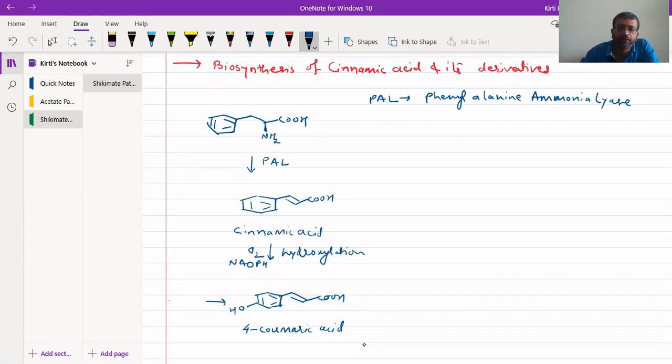This can also be obtained from L-tyrosine in presence of the same phenylalanine ammonia lyase. The same enzyme that has catalyzed the deamination reaction from phenylalanine into cinnamic acid can catalyze deamination reaction from L-tyrosine to 4-cumeric acid.